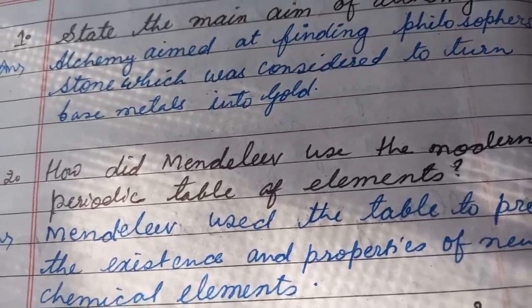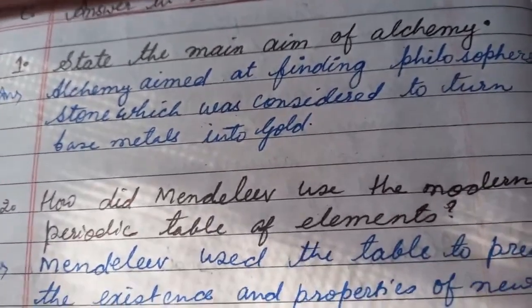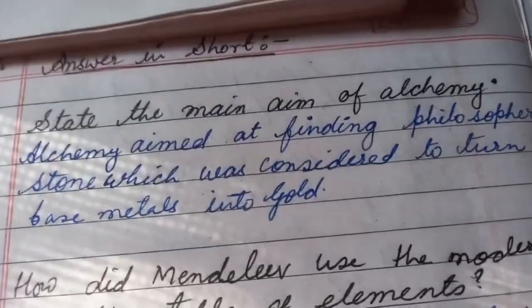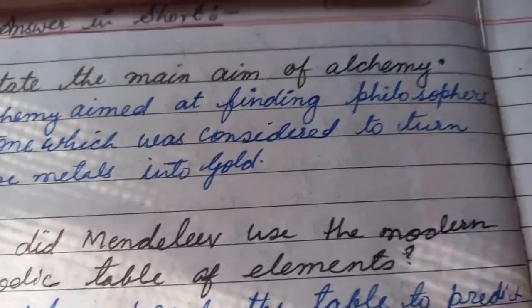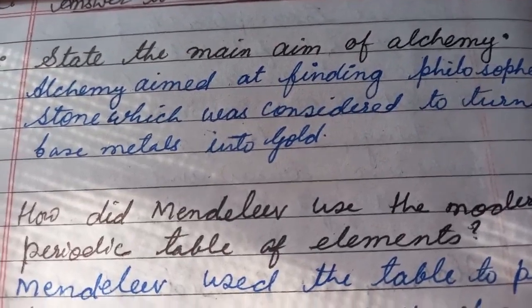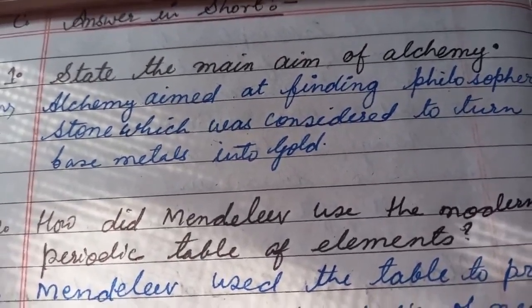First question is state the main aim of alchemy. For that you will write: alchemy aimed at finding philosopher's stone which was considered to turn the base metals into gold. Put a full stop and this is the complete answer.